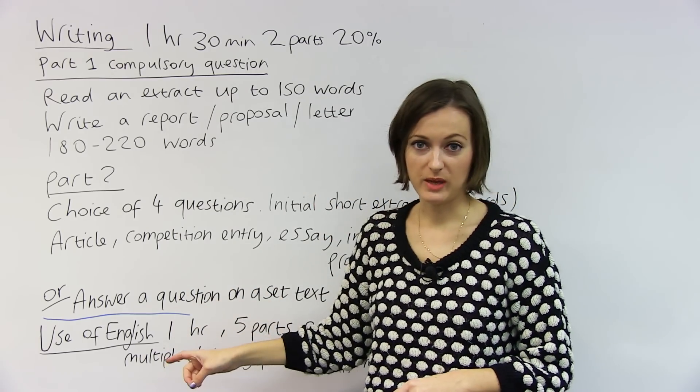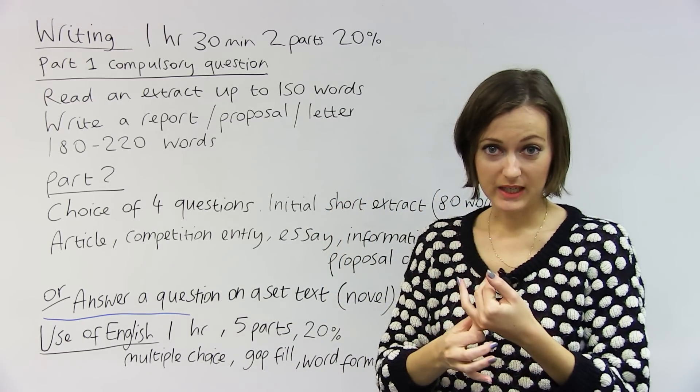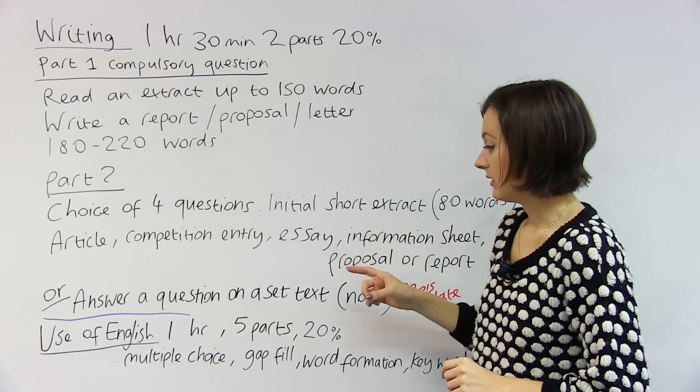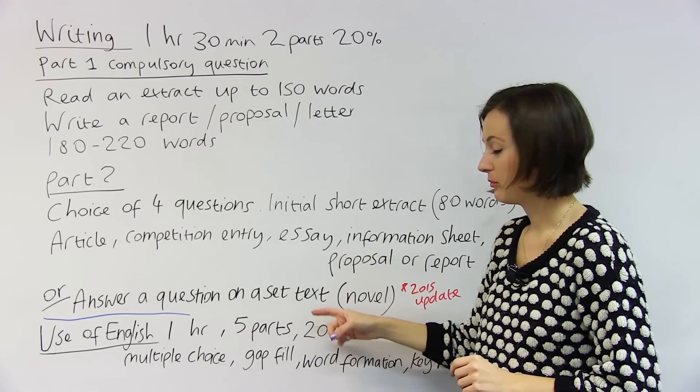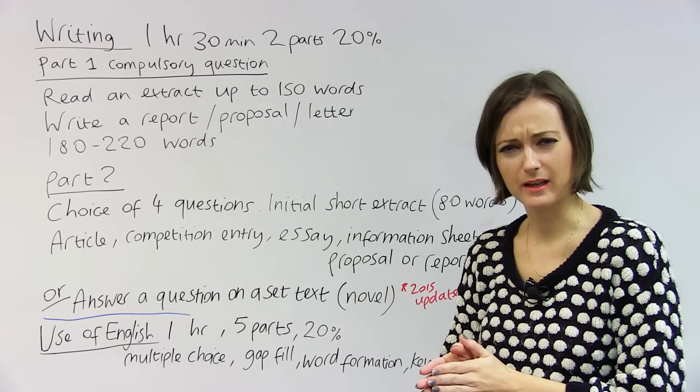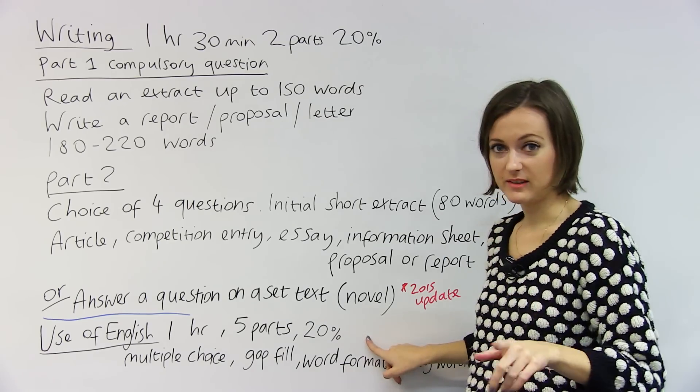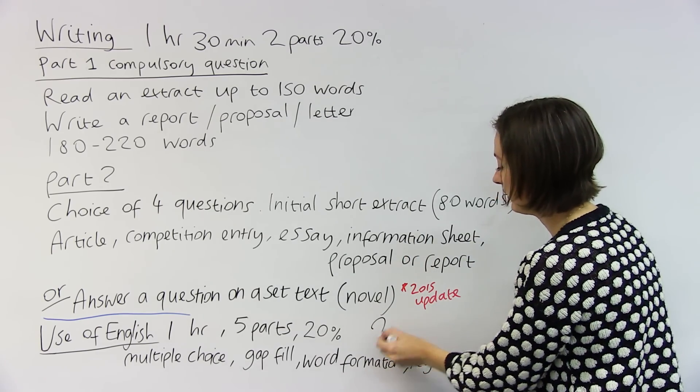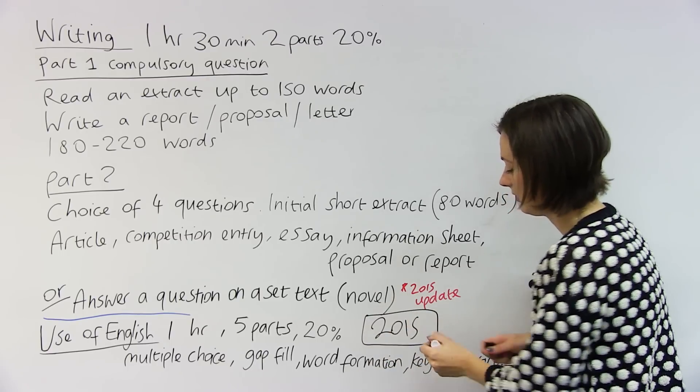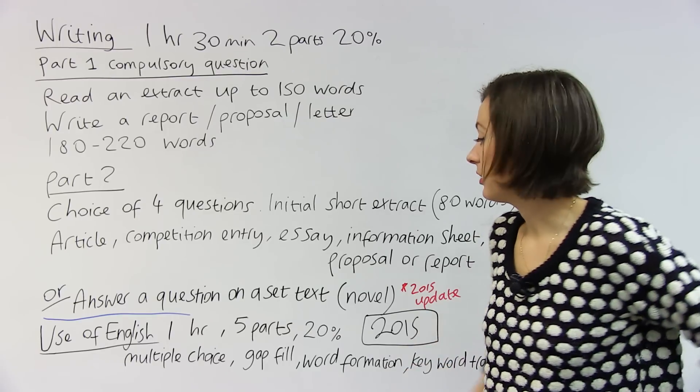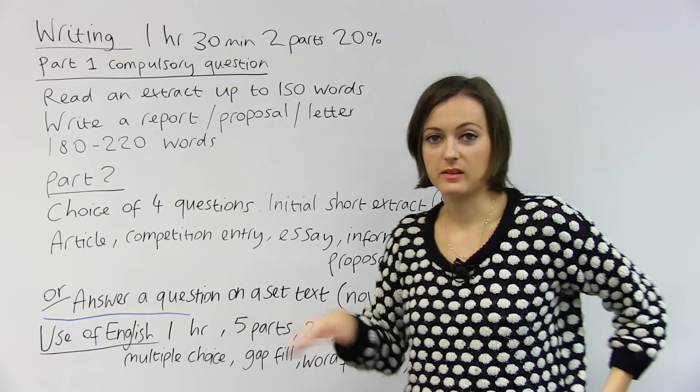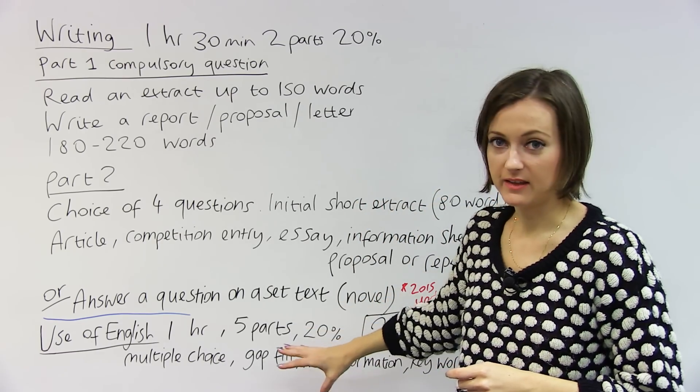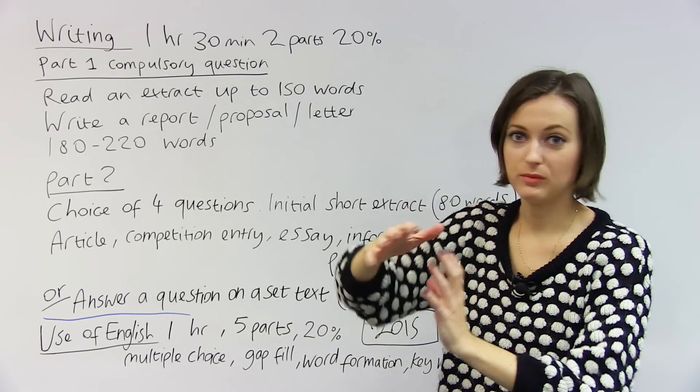And moving on from that now, talking about the use of English paper. This is the paper that's looking at your grammar and also your vocabulary in detail. So you have a one-hour test. There are five parts, and this would also be 20% of your exam result. Remember that this also changes in 2015, so you won't have this part as a standalone. So after the exam change, you cannot do the use of English as an individual test within CAE. This part of the test will join the reading test and you'll be assessed generally.